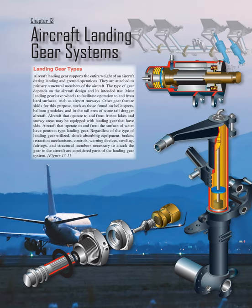Chapter 13: Aircraft Landing Gear Systems. Landing gear supports the entire weight of an aircraft during landing and ground operations. They are attached to primary structural members of the aircraft. The type of gear depends on the aircraft design and its intended use. Most landing gear have wheels to facilitate operation to and from hard surfaces, such as airport runways.